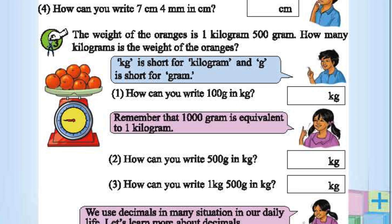How you write 100 grams in kg? 0.1 kg. 0.1 kg. 100 by 1000.